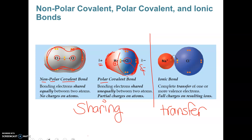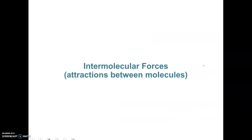Both polar and non-polar covalent involve sharing. With ionic bonding, there is a transfer of electrons — one atom basically takes electrons from the other, and you end up with full charges. The sodium has a positive charge and the chlorine ends up with a negative, and the opposite charges hold them together. We talked about that last time.